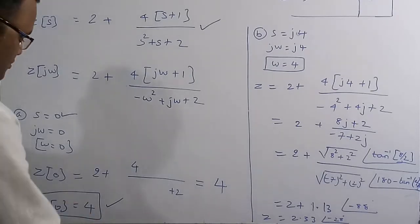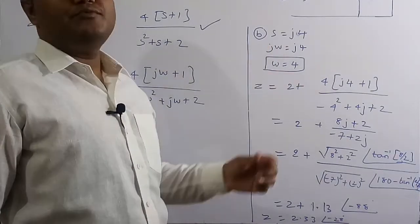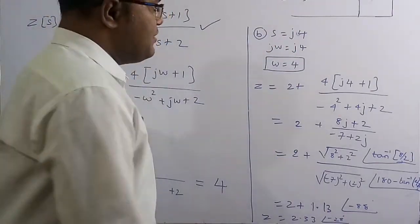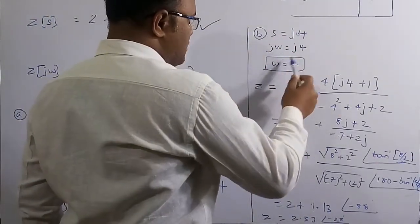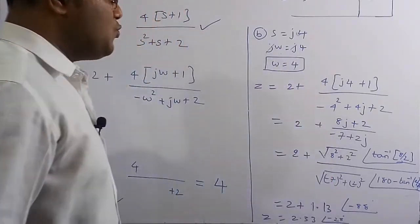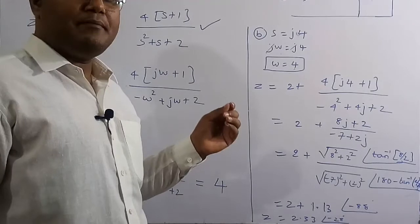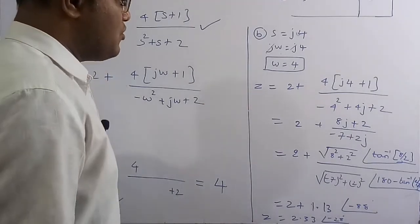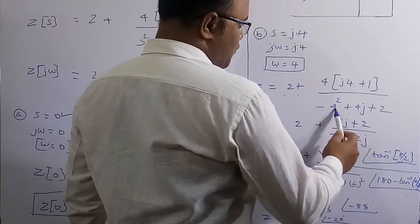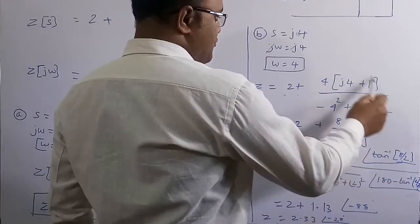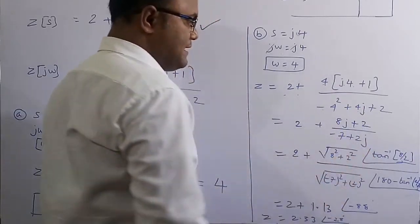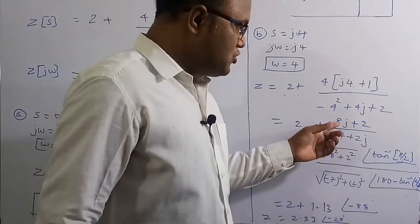For the second case, at s = j4: since s = jω, comparing gives ω = 4. Substituting ω=4: Z = 2 + 4(j4+1)/(−4²+j4+2) = 2 + 4(j4+1)/(−16+j4+2) = 2 + (8j+4)/(−14+2j), which simplifies to 2 + (2+8j)/(−7+2j... wait, −14+2 = −12... ) let's simplify: numerator 2+8j, denominator −7+2j after dividing by 2... wait following the video: 2 + (2+8j)/(−7+2j).